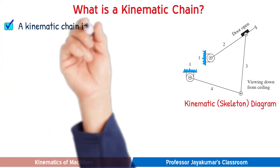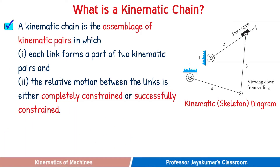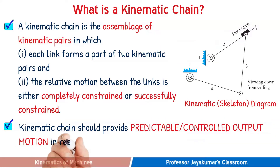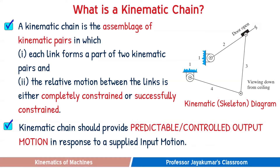The assemblage of kinematic pairs will form a kinematic chain, but it should satisfy two conditions. The first one is: each link should form a part of two kinematic pairs. The second condition is: the relative motion between the links should be either completely constrained or successfully constrained. This means the kinematic chain should provide a predictable, controlled output motion in response to a supplied input motion. If the chain does not provide predictable output motion, then we cannot call that assemblage of pairs a kinematic chain.